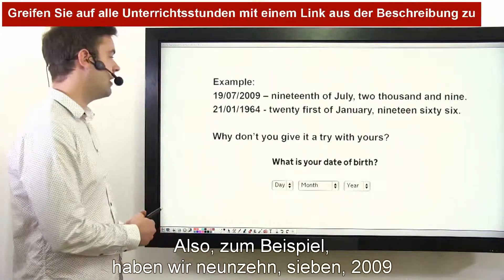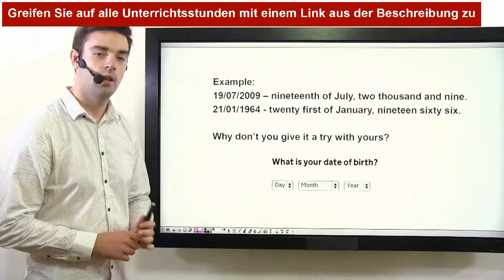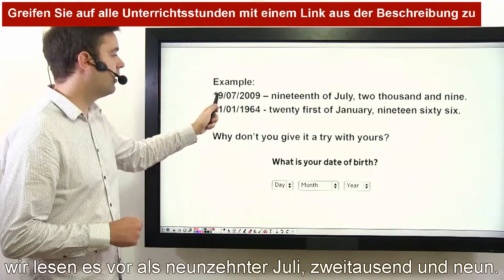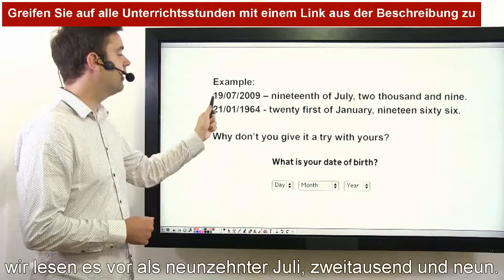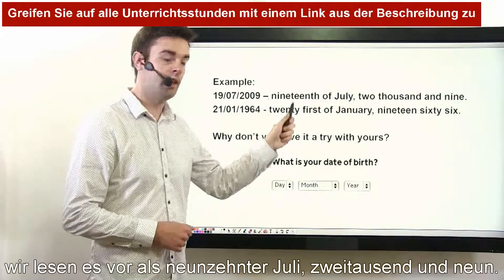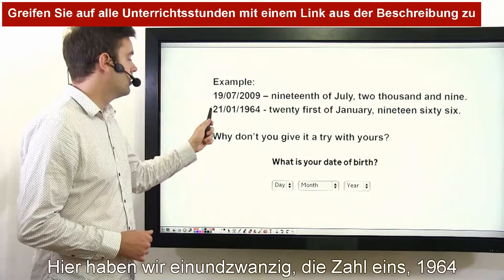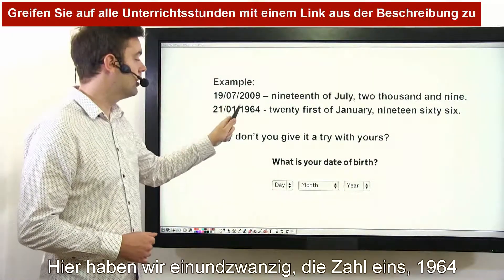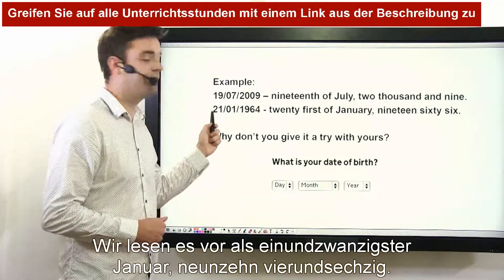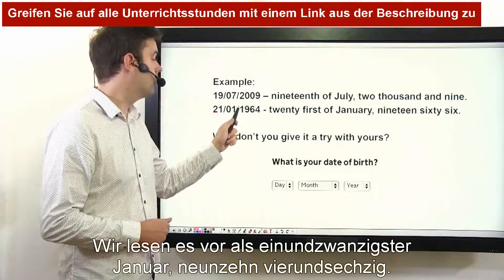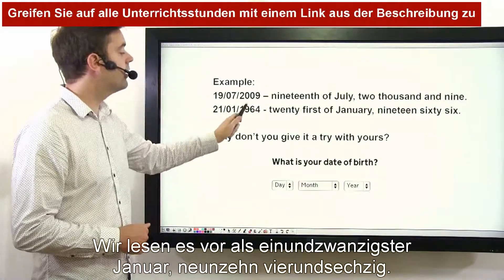For example, we have 19/7/2009. We read it out as the 19th of July, 2009. Here we have 21/1/1964, and we read it out as the 21st of January, 1964. Why don't you give it a try with yours? What is your date of birth? Have a go.